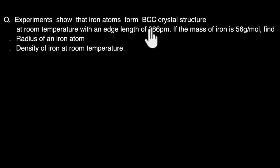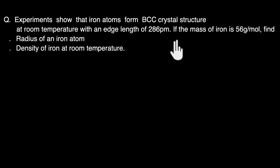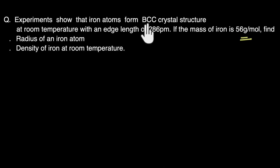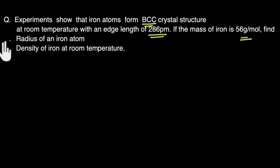Experiments show that iron atoms form a BCC crystal structure at room temperature with an edge length of 286 picometers. If the molar mass of iron is 56 grams per mole, we are asked to find the radius of the iron atom and the density of iron at room temperature.